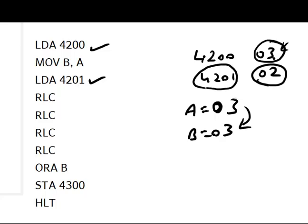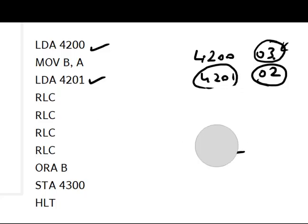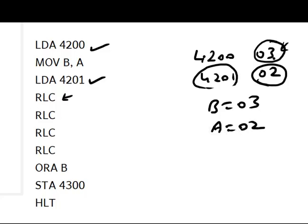Then again LDA 4201 — the data at location 4201, which is 02, comes into register A. So now register A becomes 02. At this point we have B equal to 03 and A equal to 02. Next we perform RLC four times.